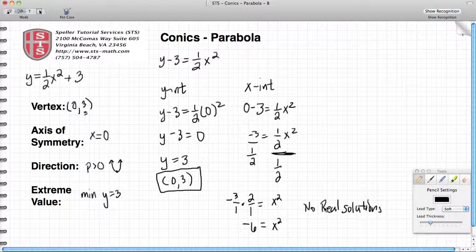Since we have no real solutions, that basically means that we do not have any x-intercepts. So let's recap the information that we have: no x-intercepts, a y-intercept at (0,3), vertex is also at (0,3).